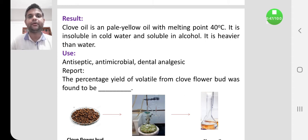The genuine clove should contain at least 15% v/w of volatile oil. The collected volatile oil should be pale yellowish in color. The melting point is around 40 degrees centigrade. It should be insoluble in cold water.